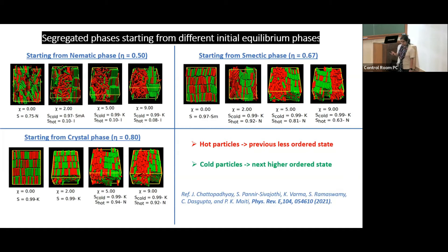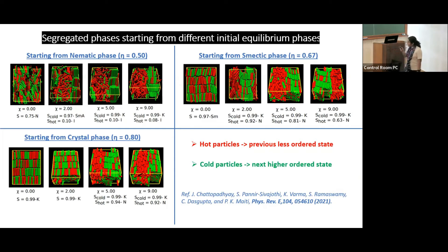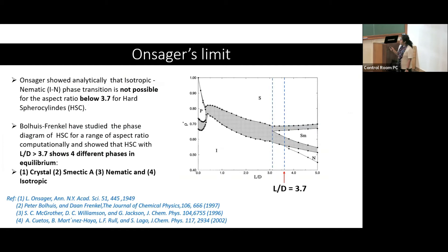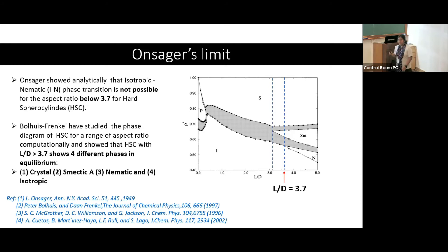These results are for one aspect ratio. Aspect ratio greatly impacts equilibrium phase behavior. Onsager's limit states that below L/D = 3.7 you will not get nematic ordering. Bolhuis and Frenkel confirmed computationally that below 3.7 you get no nematic state, and below 3.1 you get no smectic state. So in equilibrium there is a cutoff below which liquid crystal phases cannot exist.